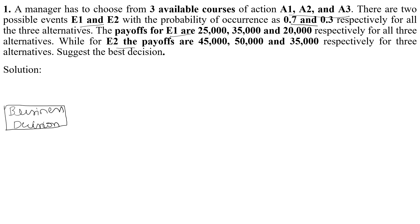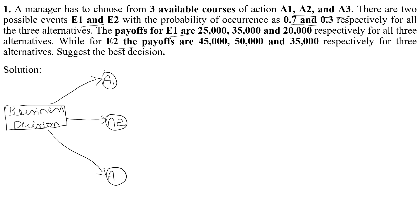A business has to decide from A1, A2, and A3. So in the diagram, we draw a decision node box. From that box we draw three branches: one labeled A1, one labeled A2, and one labeled A3. Under A1, and for each of the three courses of action, there are two possible events — E1 and E2 — as only E1 and E2 are given for all three alternatives.